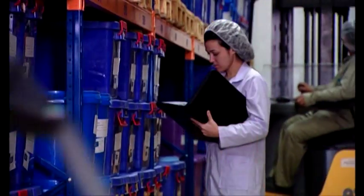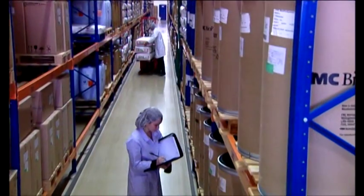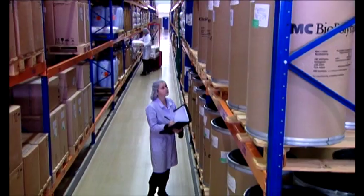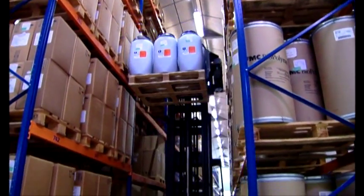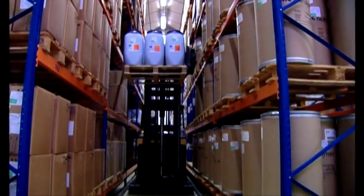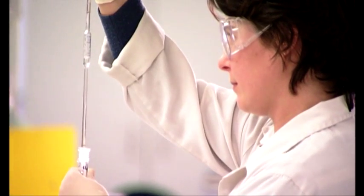Material entering the separate warehouses are identified and quarantined until they have been released from quality control. Only then are they stored on the allocated warehouse racks awaiting production request.